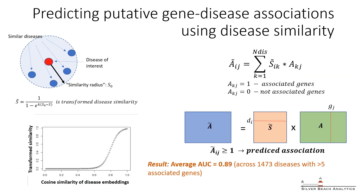To verify this, we designed an algorithm for scoring observed and putative gene-disease associations. For a gene-disease association of interest, the score is computed by integrating evidence of associations from similar diseases in proportion to their similarity to the disease in question. This score can then be used as a classifier to predict novel gene-disease associations. Overall, this approach yielded fairly accurate predictions of known associations for the majority of diseases, with an area under the curve of 0.9.